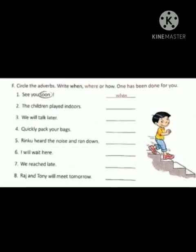Now, exercise F: circle the adverb and write 'when', 'where', or 'how'. Children, as you can see the sentences, you have to circle the adverbs and then write 'when', 'where', or 'how' related to the sentences.